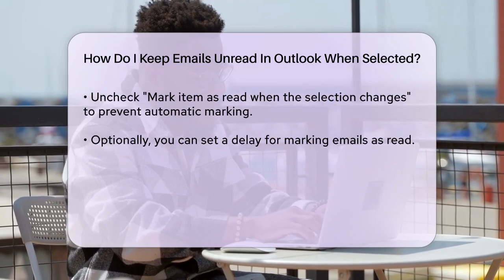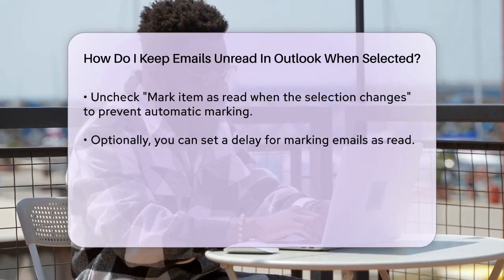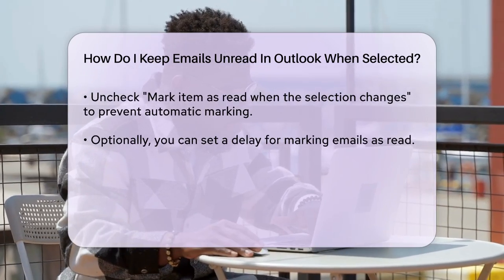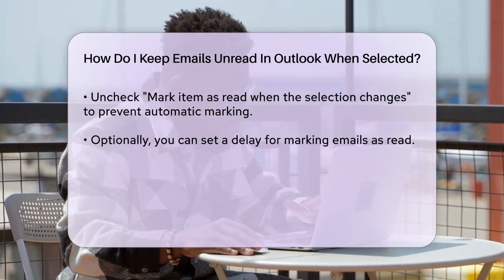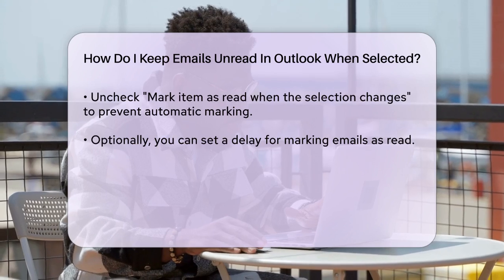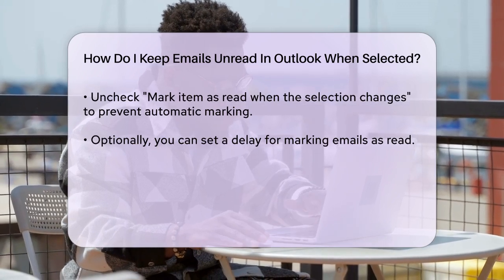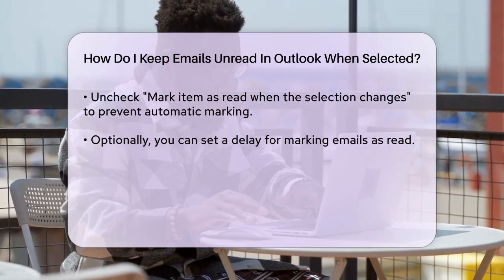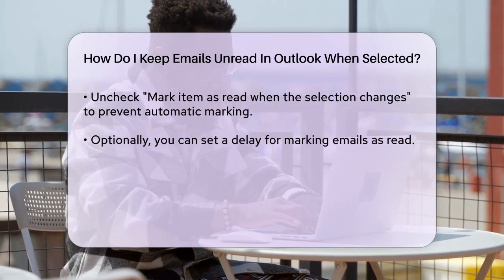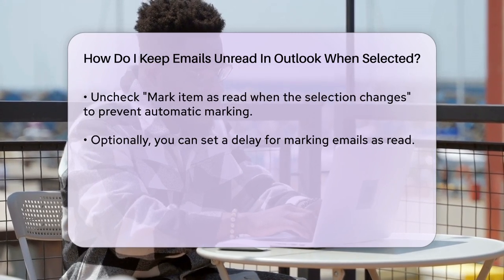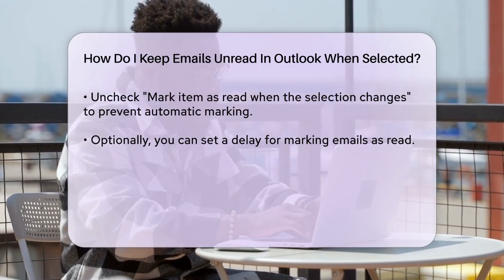If you prefer to use keyboard shortcuts, you can mark an email as read by pressing Ctrl-Q, or mark it as unread by pressing Ctrl-U. This way, you have full control over when an email is marked as read or unread.